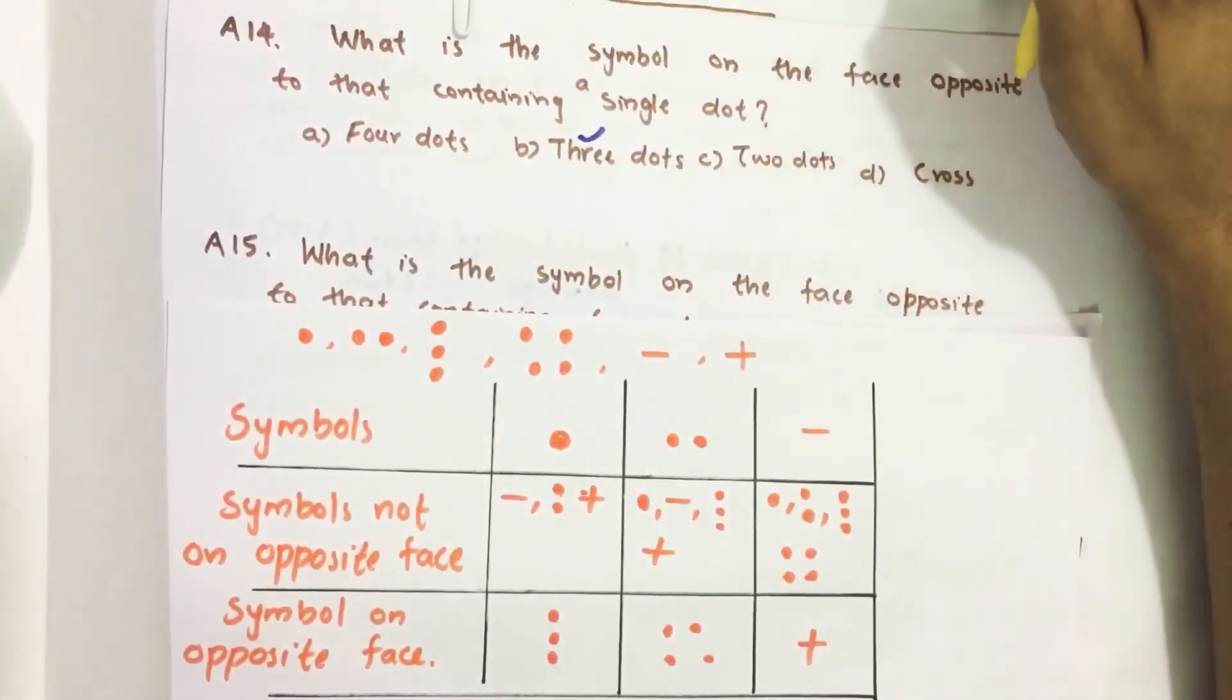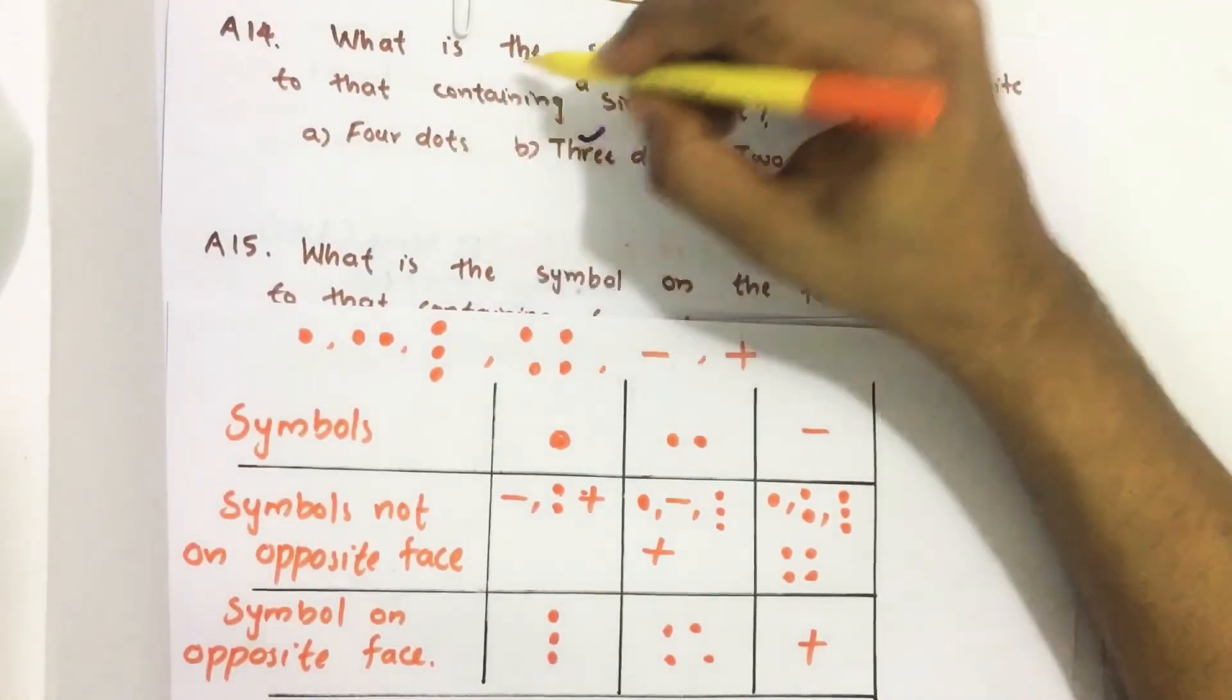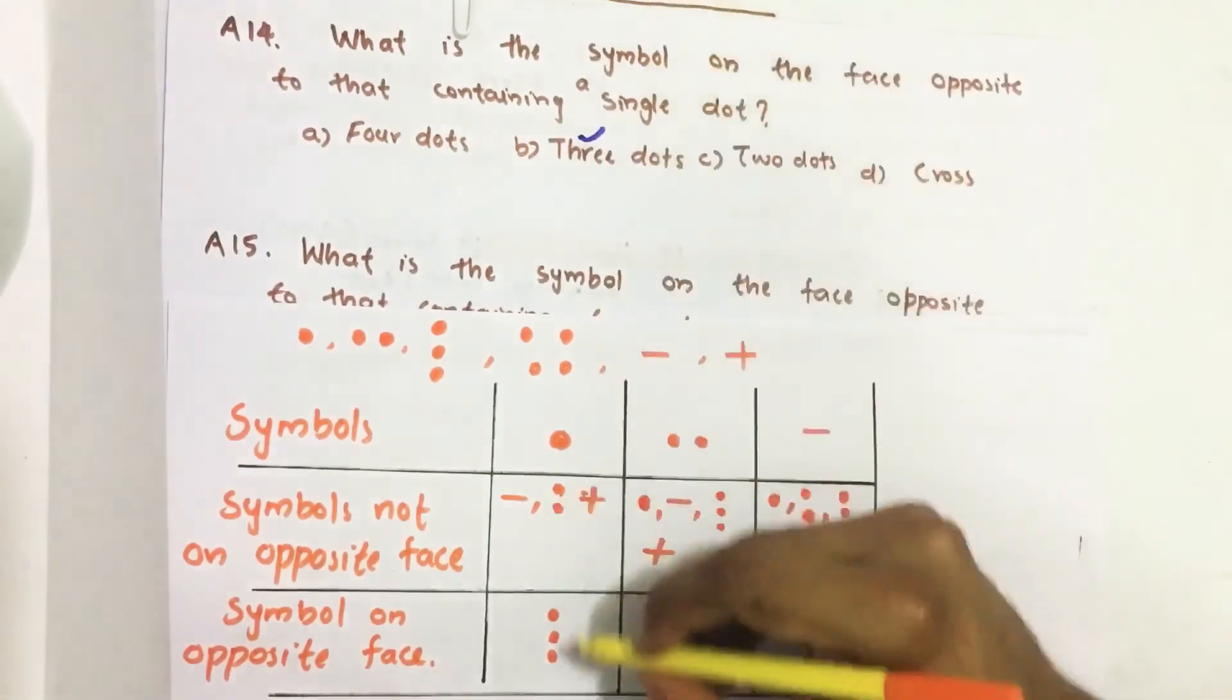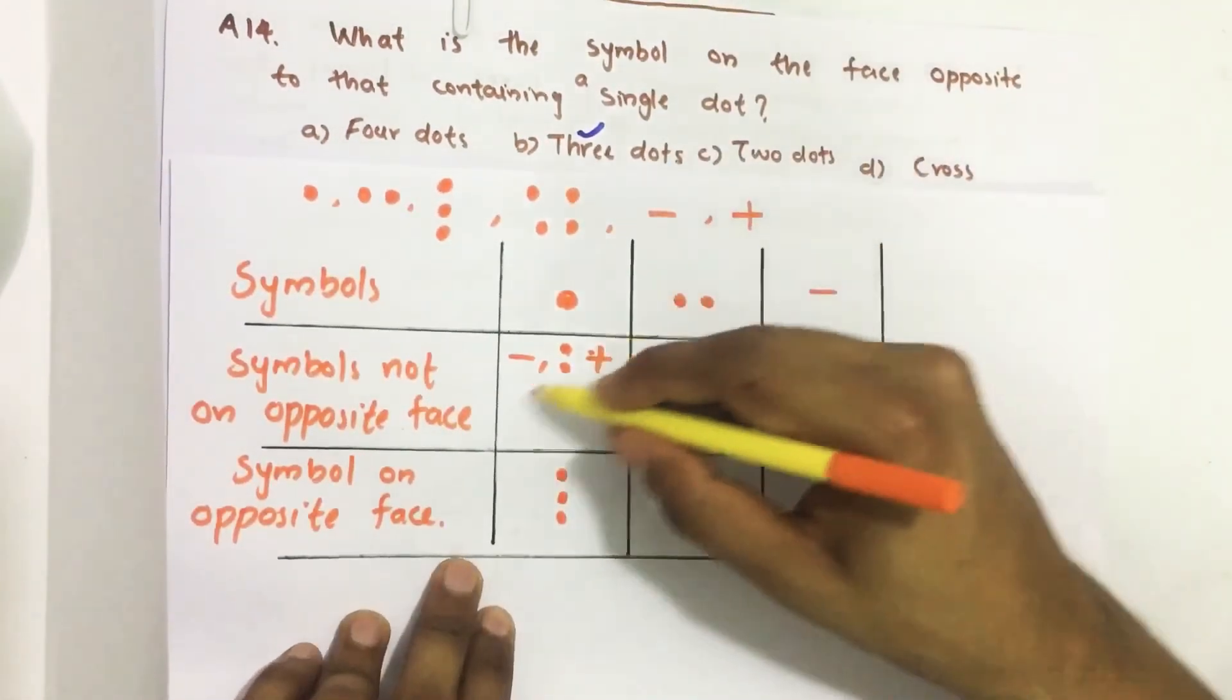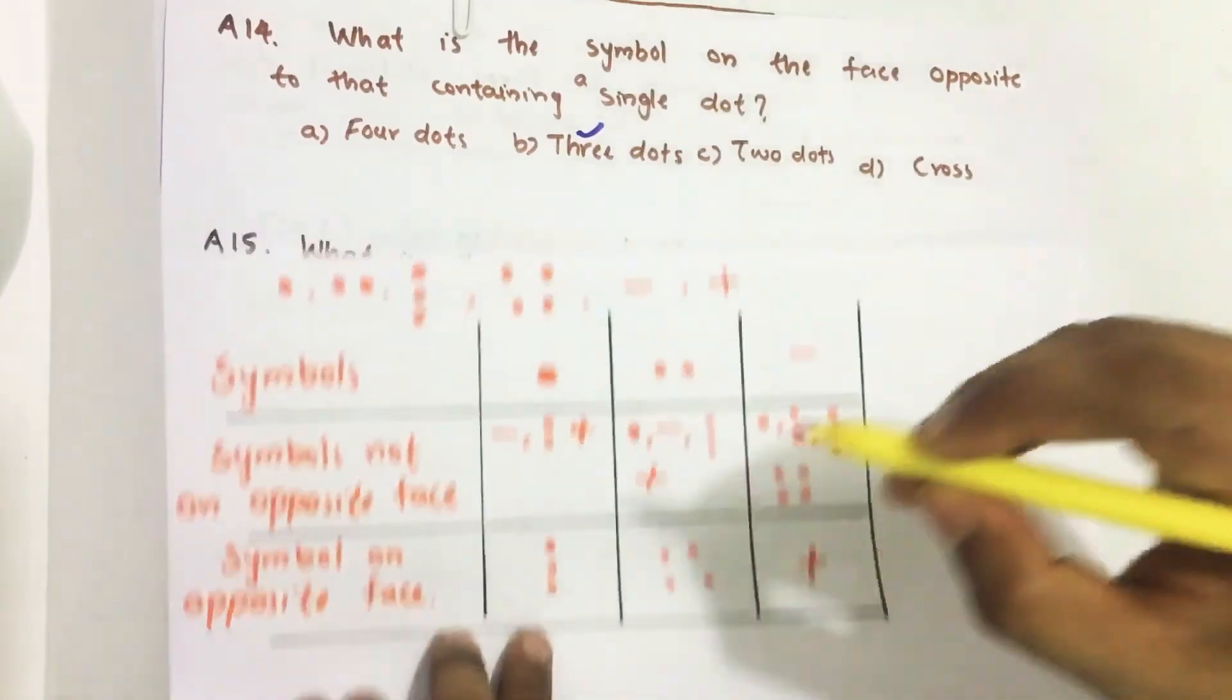What is the symbol on the face opposite to that containing a single dot? It is three dot. From this table we get it is three dot.